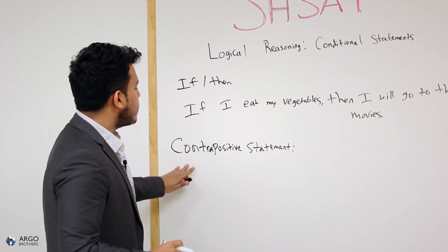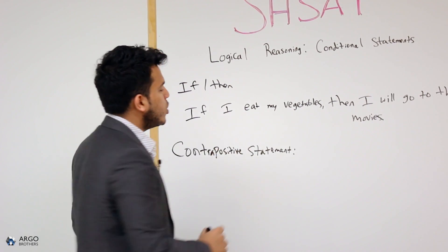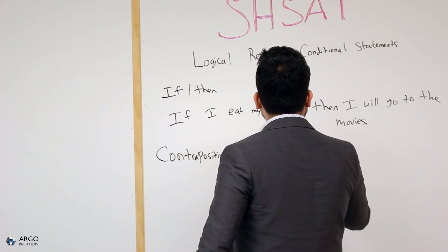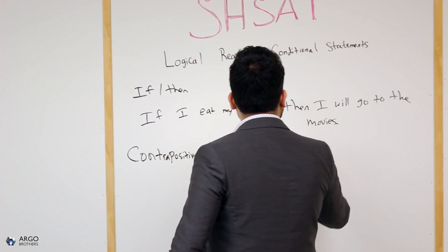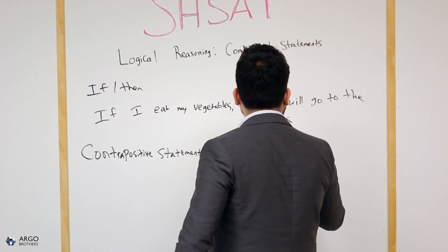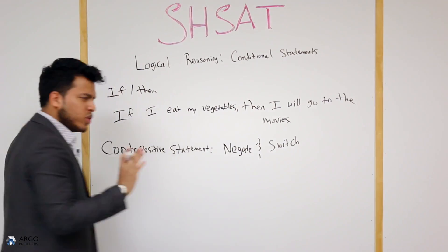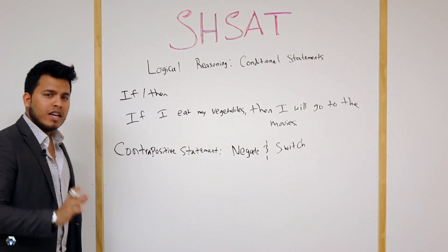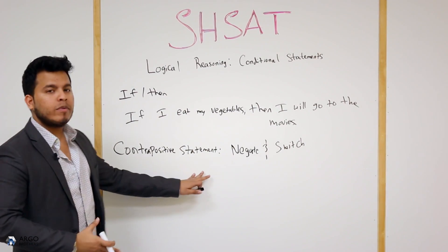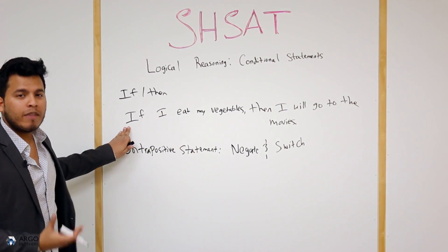If you want to find out the contrapositive statement, what you have to do is negate and switch the following statement. And as soon as you do that, that is a valid conclusion — this statement will hold true for the original statement.